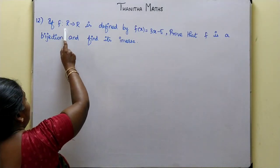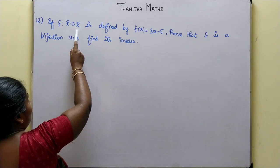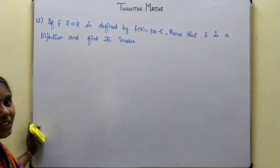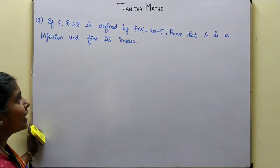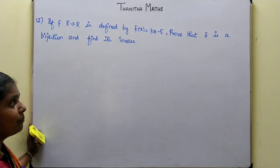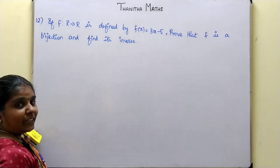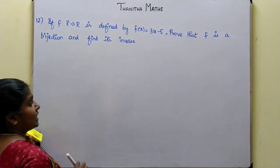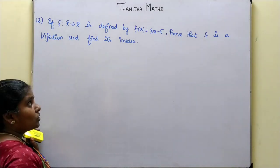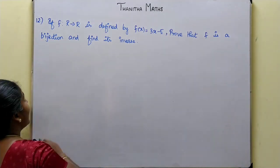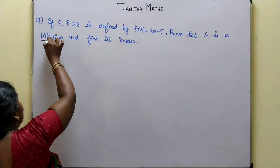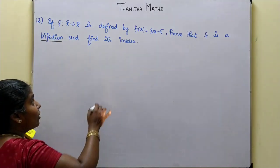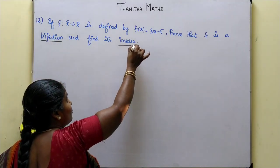If f is a function from R to R defined by f of x equals 3x minus 5, prove that f is a bijection and find its inverse. So we have to prove that the function is a bijection function and we have to find the inverse.